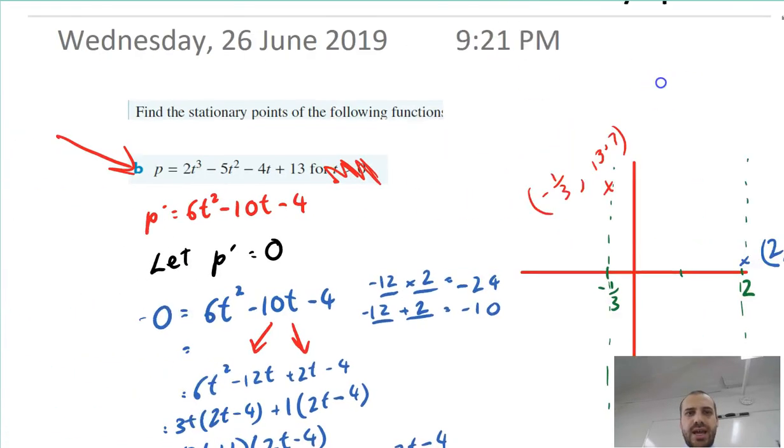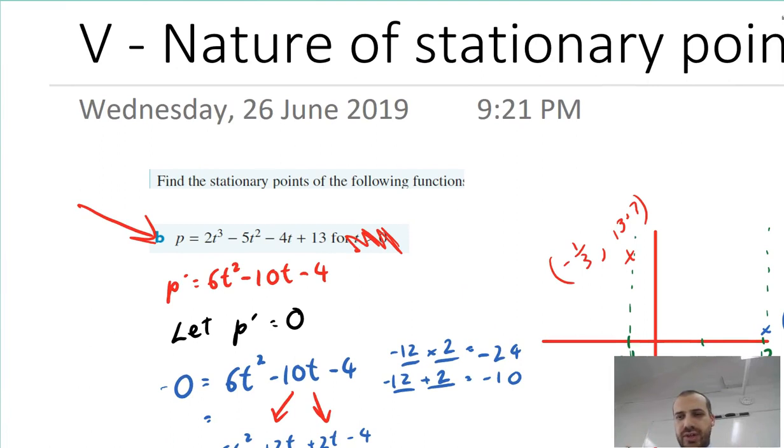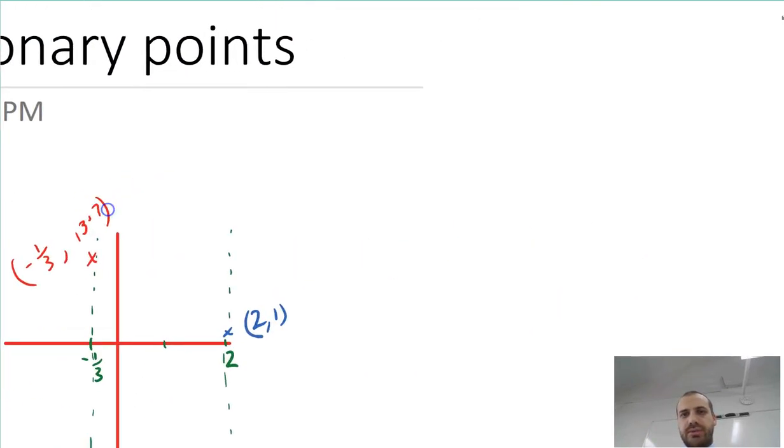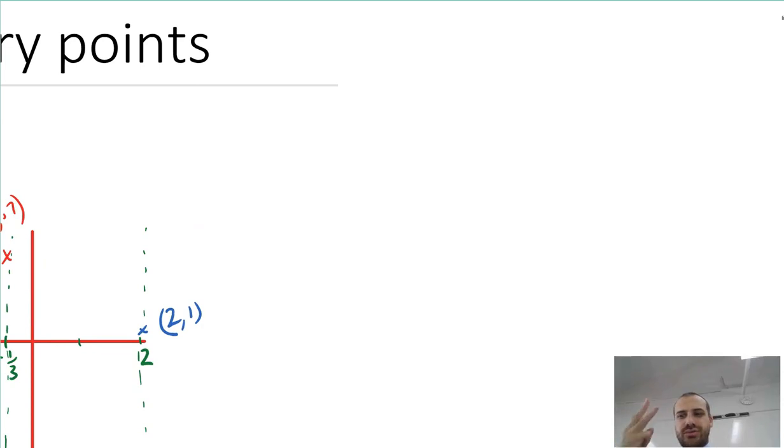Now we're finding the nature of the stationary points in this video. The nature of a stationary point, a stationary point can be three things, kind of like four things. It can be a maximum, and a maximum looks like that, like you're standing on top of a hill, that's why it's called a maximum.